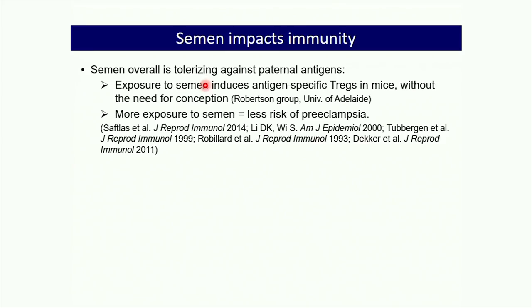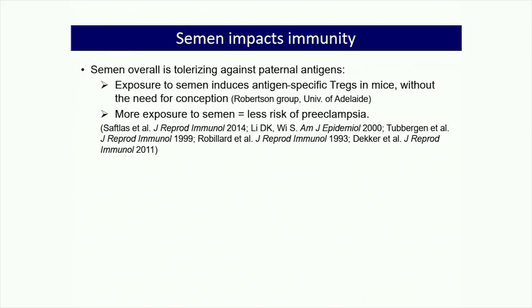The Robertson group in Australia has done elegant mouse studies showing that exposure to semen induces a small pool of antigen-specific Tregs in the periphery, without the need for conception. This pool is thought to expand upon successful conception and support pregnancy development. There is also epidemiological evidence in humans: longer-term exposure to a specific partner's semen during unprotected sex is very protective against developing preeclampsia, which arises from aberrant immune responses to fetal cells during placentation.